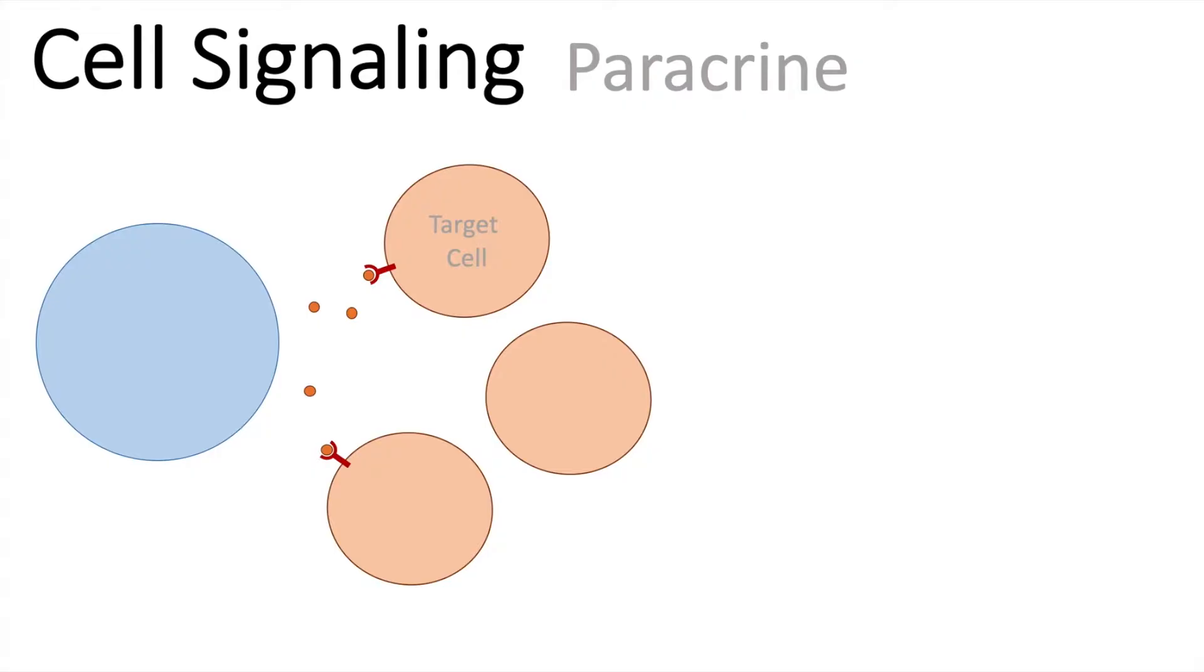However, cells in the near surrounding with no expression of this receptor, they cannot be targeted for communication. It is important to mention here that for paracrine signaling the cells have to be in rather close range.